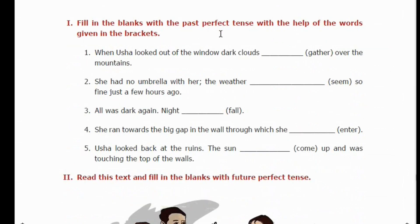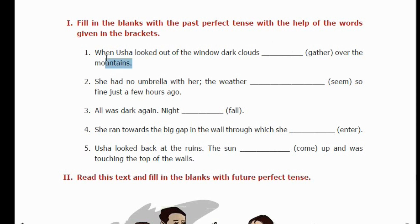Next exercise: fill in the blanks with the Past Perfect Tense using the words given in brackets. In Past Perfect Tense, we must use 'had.' So: 'When Usha looked out of the window, dark clouds had gathered over the mountains.' Here, 'had' plus 'gathered' — 'gathered' is the past participle form of the verb 'gather.' So the answer is 'had gathered.'